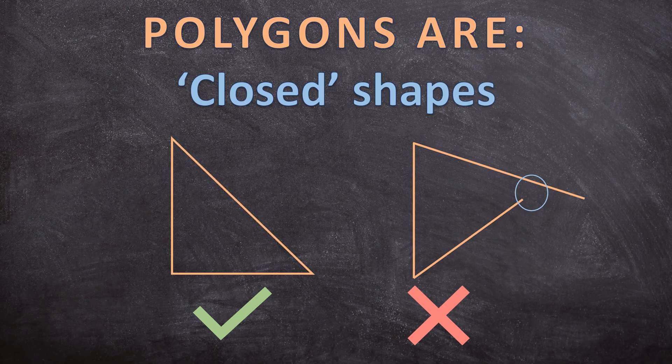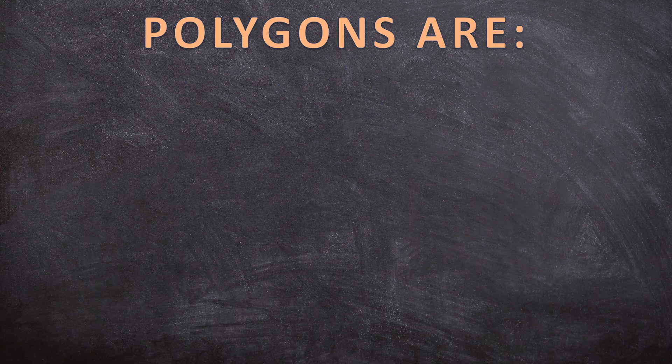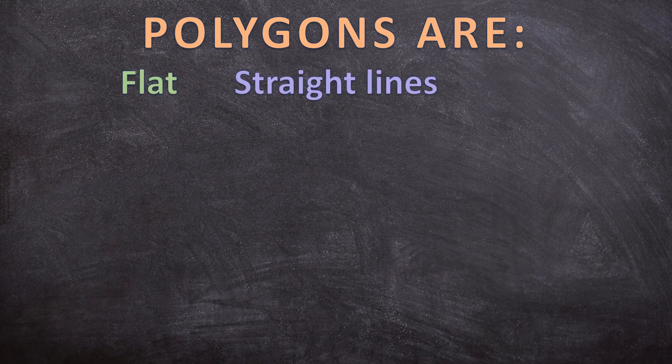Now that we have all three characteristics, let's determine whether the following shapes are polygons or not. Just a reminder: our three characteristics are — is it flat? Does it only have straight lines? And is the shape closed?